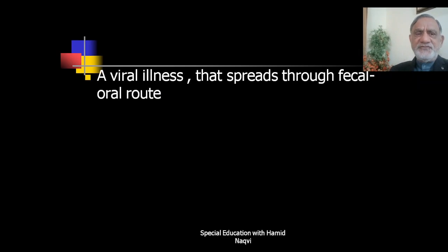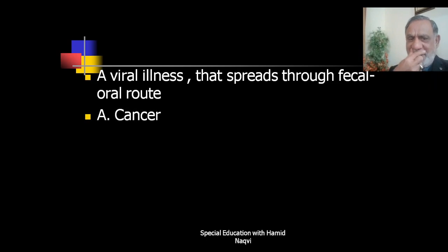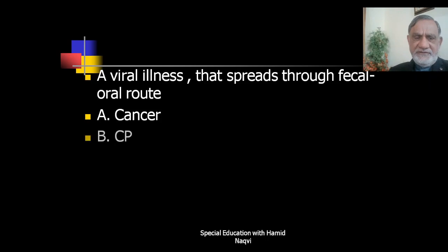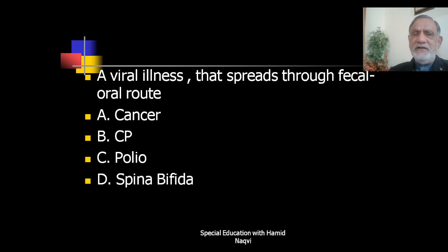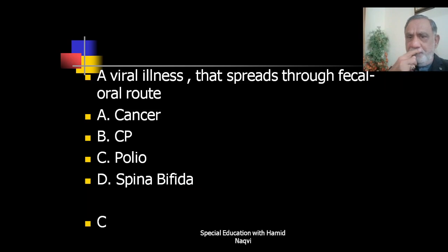Next question: Which is a viral illness that spreads through the fecal-oral route — cancer, CP, polio, or spina bifida? The correct answer is C — polio spreads through the fecal-oral route.